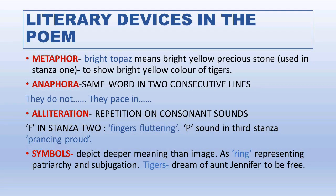Now, the literary devices in the poem. We will focus on four literary devices particularly seen in the poem: metaphor, anaphora, alliteration, and symbols. A metaphor is a direct comparison without using 'as' or 'like.' In the first stanza, the tigers are called 'bright topaz,' comparing them directly to a bright yellow precious stone — so this is a metaphor.